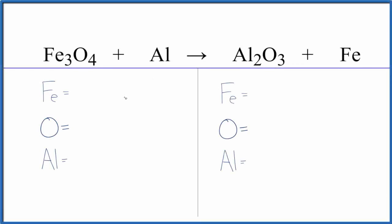I was asked to balance this equation and it's kind of an interesting equation, so let's give it a try. We'll just first count the atoms up. We have three iron, four oxygen, and then one aluminum.